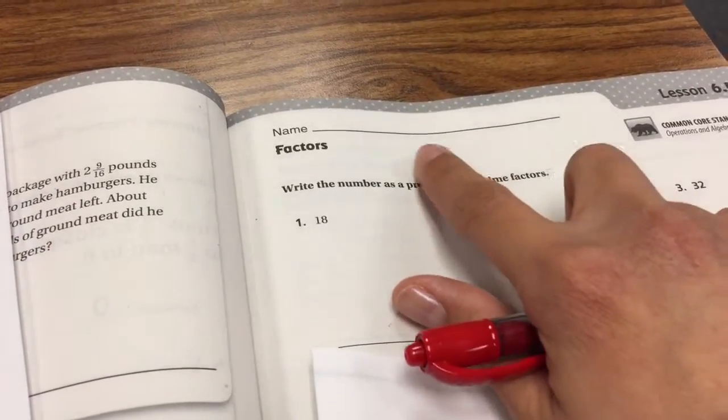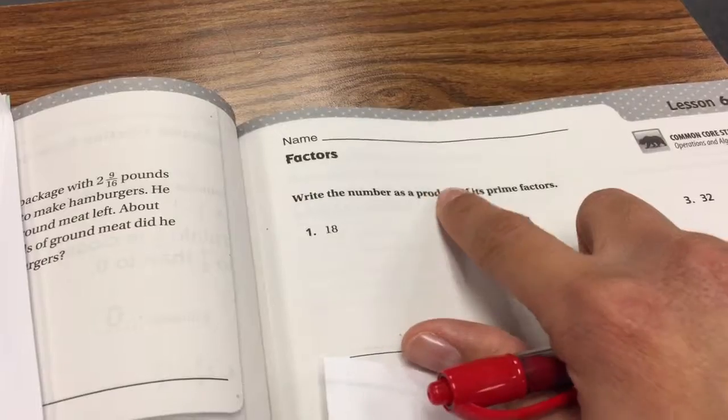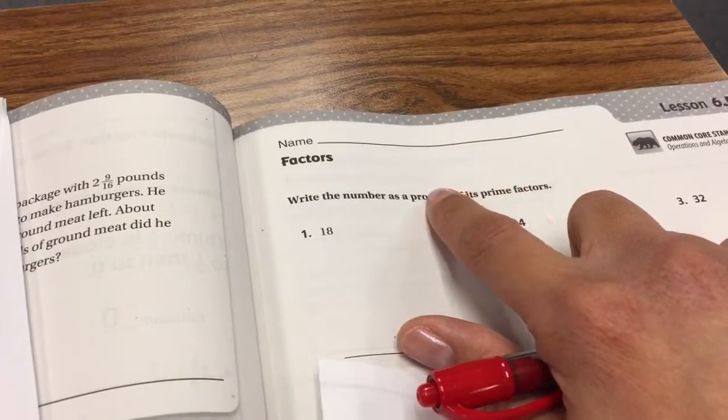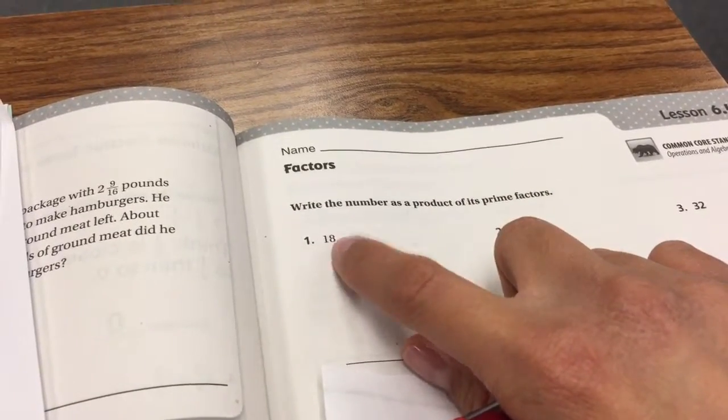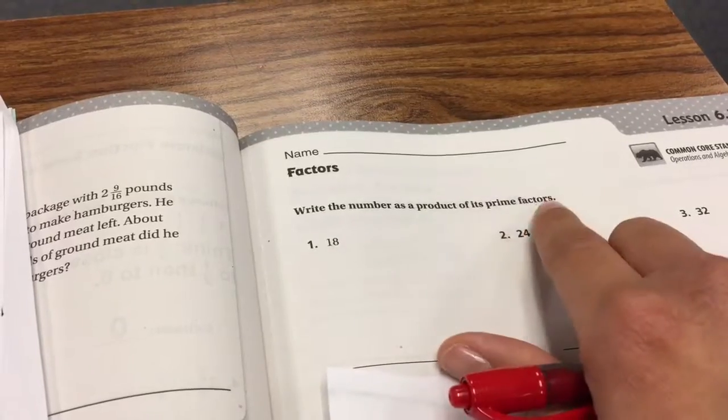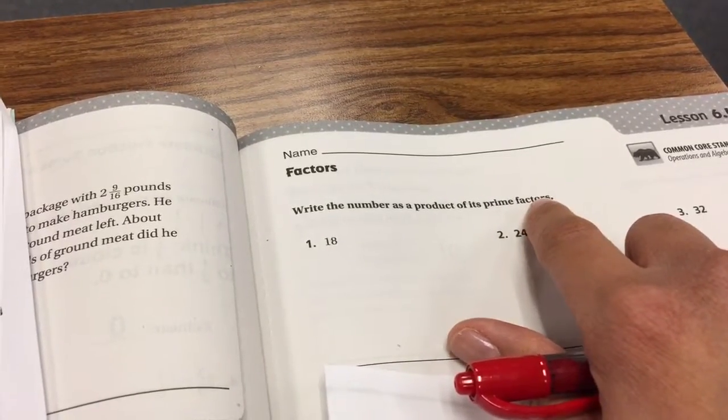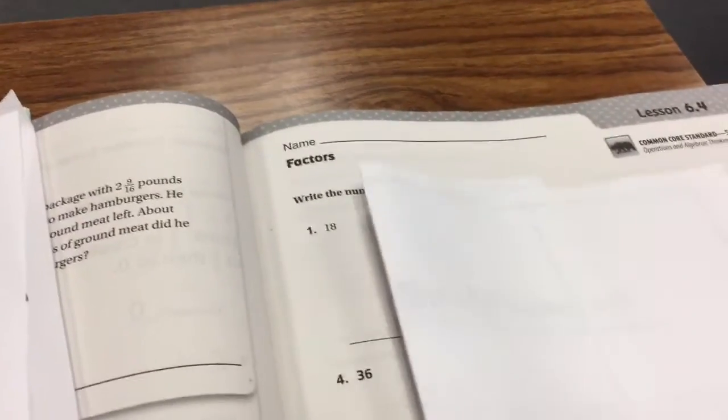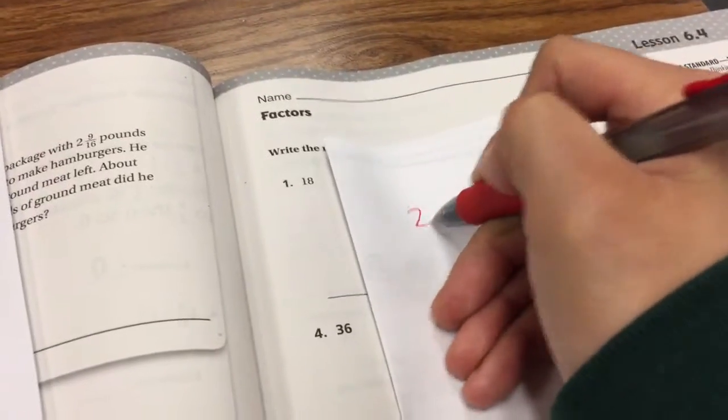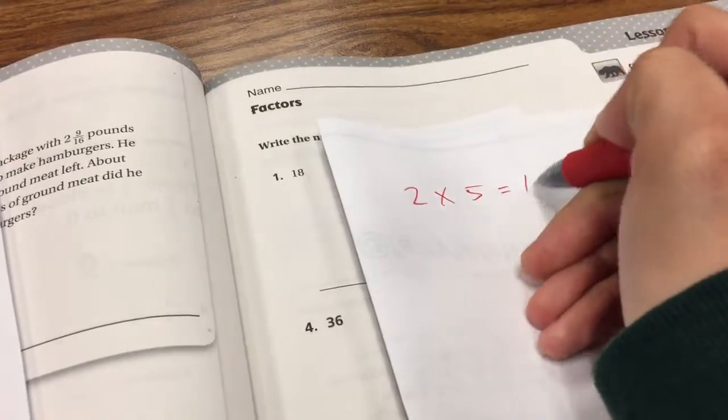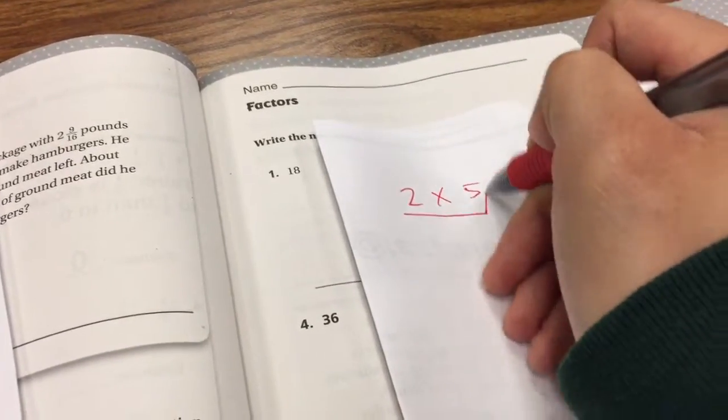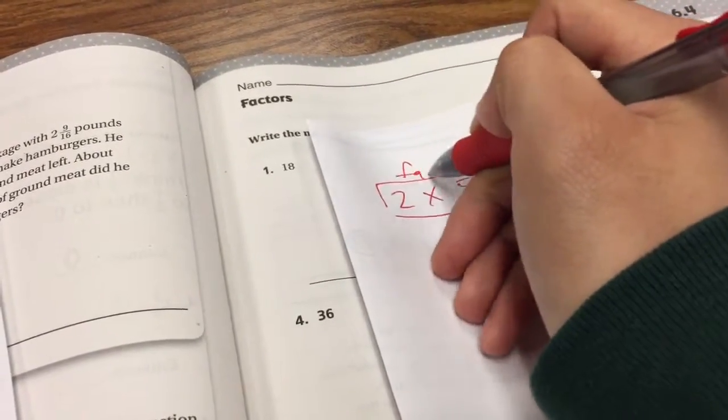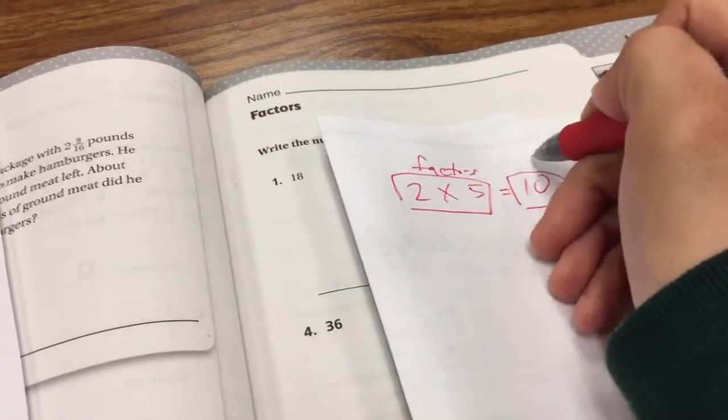First off, we need to know what the word product means. Product is the answer to a multiplication problem. So they want the answer to be 18. The word factors here is telling you the numbers that you multiply in order to get that product. For instance, the numbers 2 times 5 equals 10. 2 and 5 are the factors, and the product is 10.